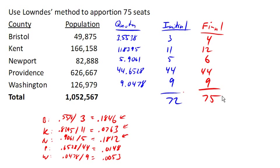Notice that there is a bias here again towards the smaller counties. It's probably not surprising that this was never accepted by Congress, considering that the smaller states that it would benefit don't have as much say in the decision-making as the larger states. Anyway, that is Lowndes' method.